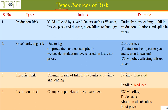Let's now study the types and sources of risk. First is production risk — yield is affected by several factors such as weather, insect pests and diseases, poor or failure of technology, and machinery breakdowns during operations. For example, untimely rains leading to a fall in production of onions in certain areas of Maharashtra can lead to a spike in prices throughout India.